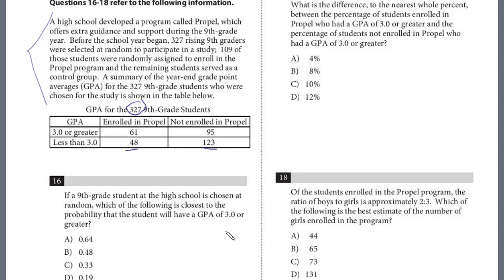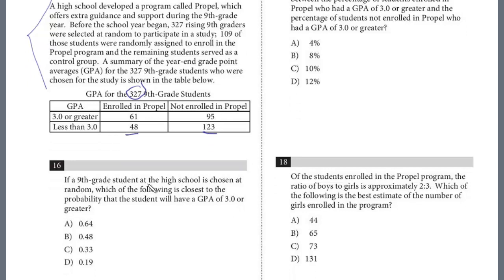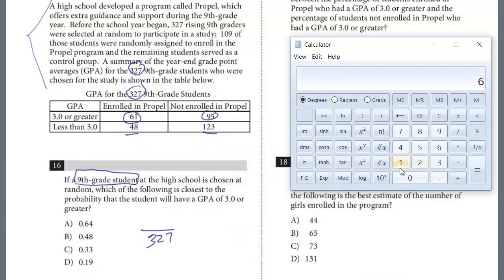Let's take a look at question 16. If a ninth grade student at the high school is chosen at random, which of the following is closest to the probability that the student will have a GPA of 3.0 or greater? You really want to read these carefully — are they talking about students in PROPEL or not? No, we're just selecting all ninth graders at the high school at random. That number was given: 327. We want to see the probability that the student will have a 3.0 GPA or greater. Looking for the ones that have a 3.0, we've got 61 and 95. So 61 plus 95 gives us the total of students who have a 3.0 or higher. We divide that 156 by 327 and we get 47.7%, so we round that to 48%.